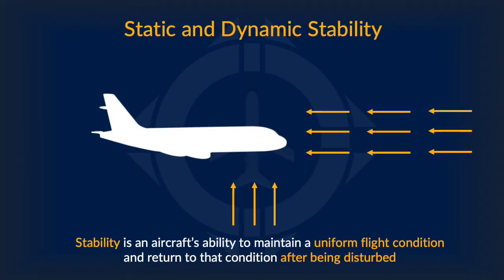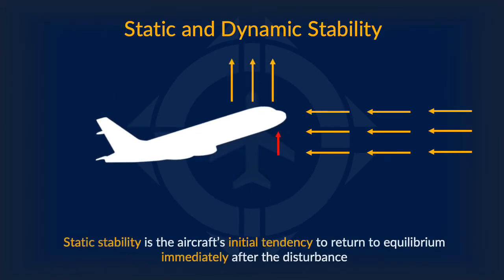Now we move on to something more interesting: stability. Stability is simply an aircraft's ability to maintain a uniform flight condition and return to that condition after being disturbed. Stability is split into two types: static and dynamic.